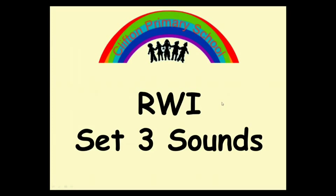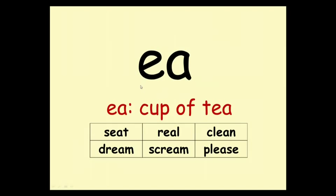Now that the children have learnt the set one and set two sounds, they're ready for set three. There are 20 sounds in all. As you can see, this sound is made up of two letters. It's the E sound. E — cup of tea.